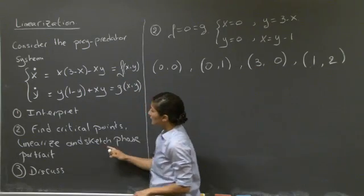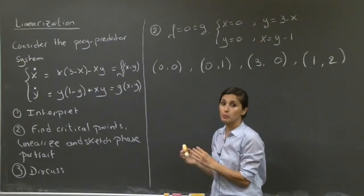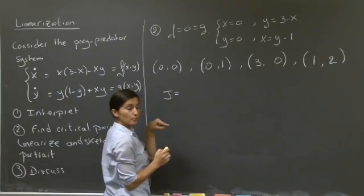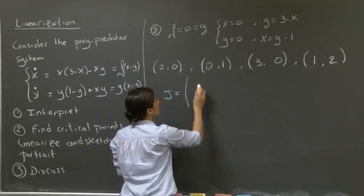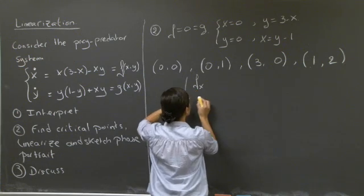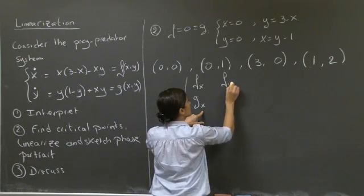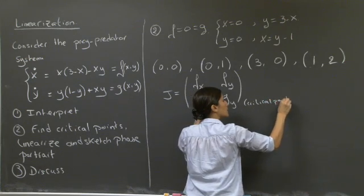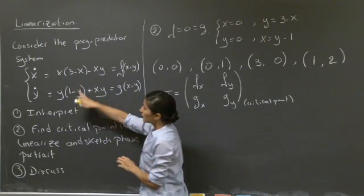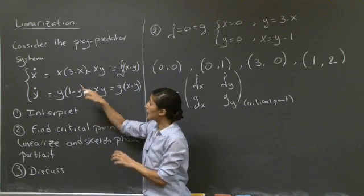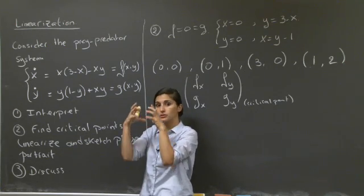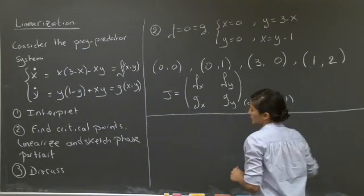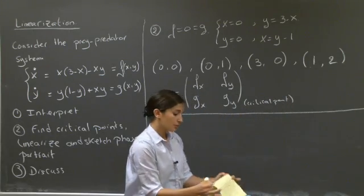Now let's look at the stability via linearization around each critical point. To linearize, we compute the Jacobian matrix — consisting of the partial derivatives of f and g with respect to x and y — evaluated at each critical point. This approximates the nonlinear system as a linear one in the neighborhood of each critical point. The method has its limitations, which we'll discuss later. I'll give you the computed Jacobian results directly.